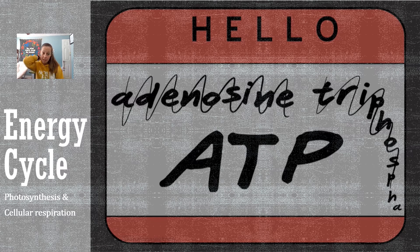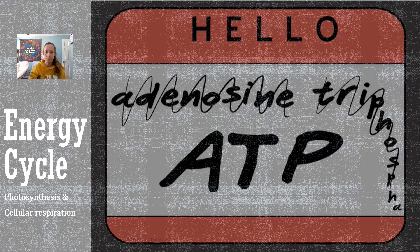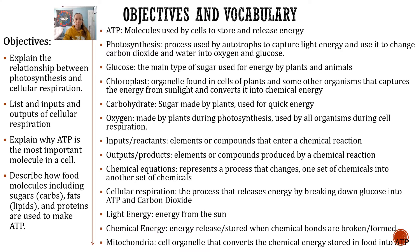Hey guys, welcome back. This week we're talking about the energy cycle. We're going to talk about how cells use photosynthesis and cellular respiration to make cellular energy or ATP. So here's our objective — what you're going to learn for the week and the vocab of the week.